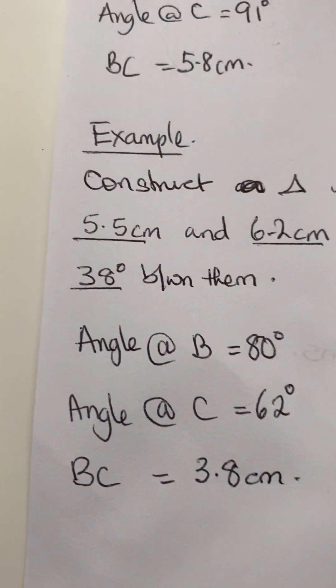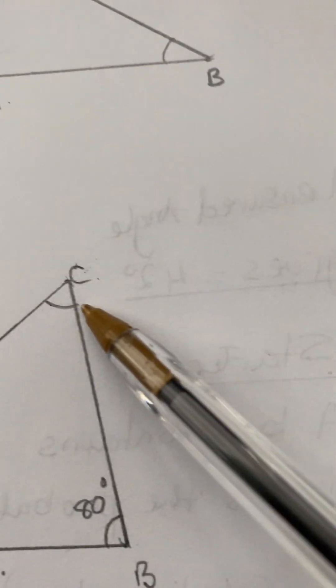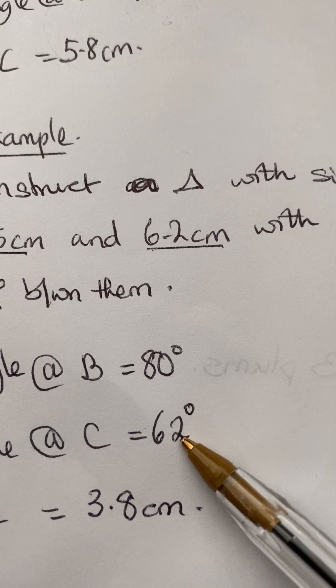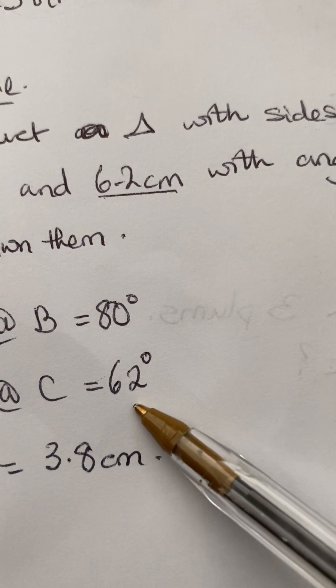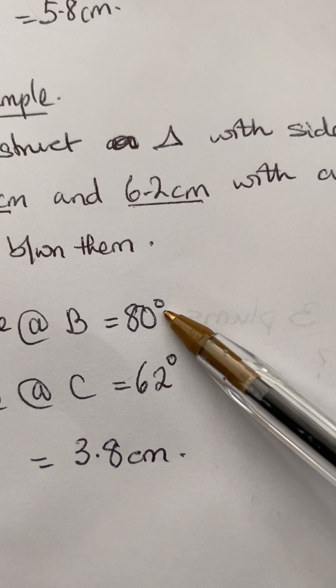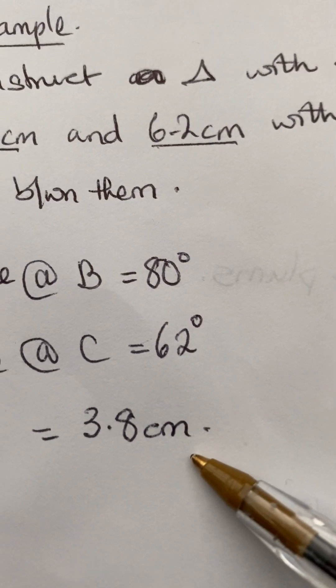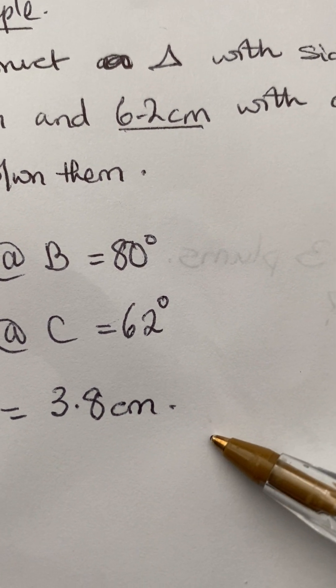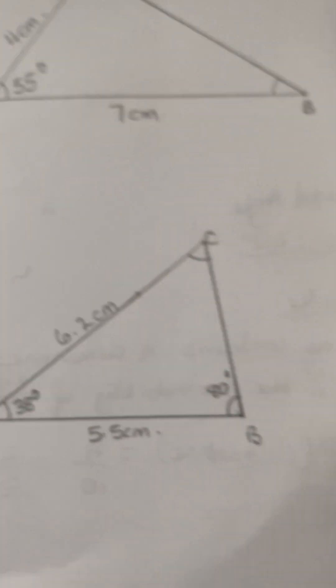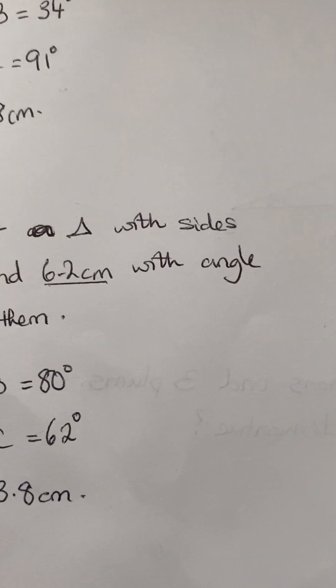If you measure the angle at C you should get 62 degrees, and the angle at B is 80 degrees. The line BC when measured is 3.8 centimeters. That is my completed diagram for this example.